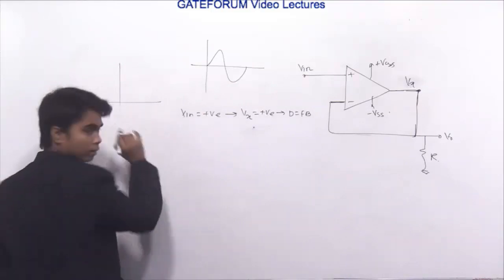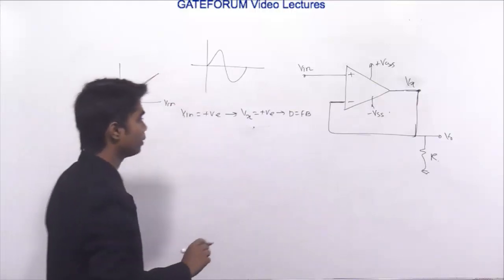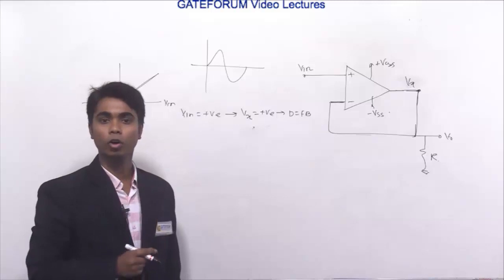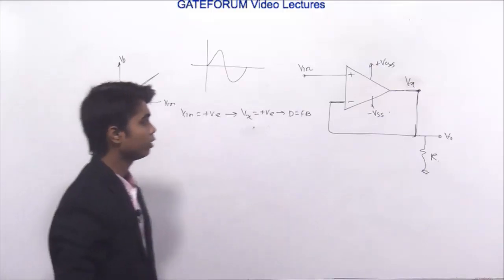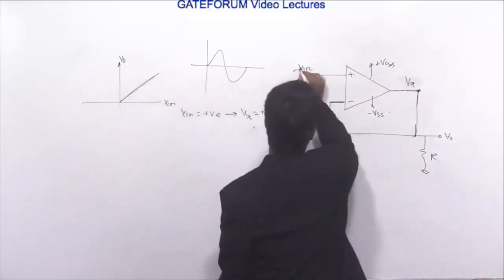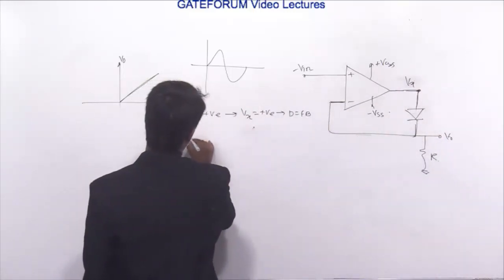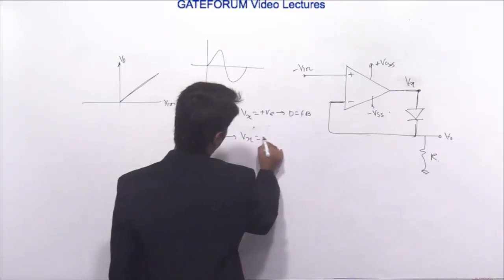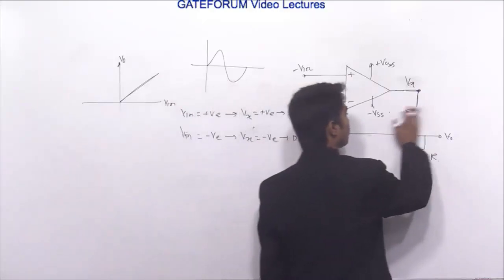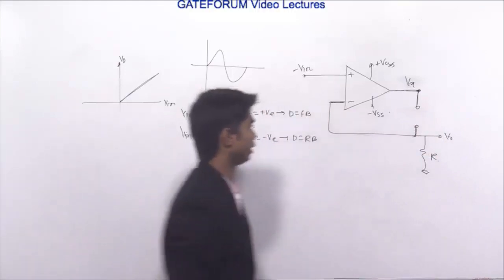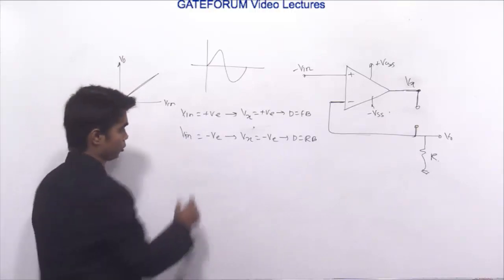With the loop closed due to negative feedback, VO will follow V_in during the positive half cycle. When V_in is negative, Vx is negative, and the diode will be reverse biased — the circuit becomes open circuited. The op-amp then operates in an open loop configuration.